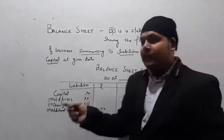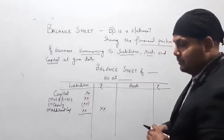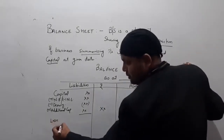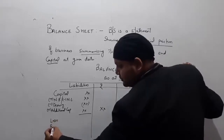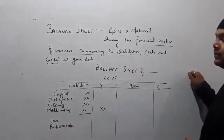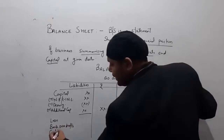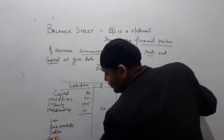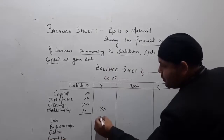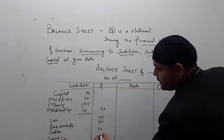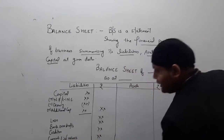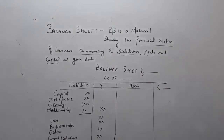There are various adjustments included in the capital. After capital, we show current liabilities and non-current liabilities — such as loans, bank overdraft (which means a negative balance in the bank account), credit cards, bills payable, and other current liabilities. After listing all these, we add them up to get the total of the liability side.